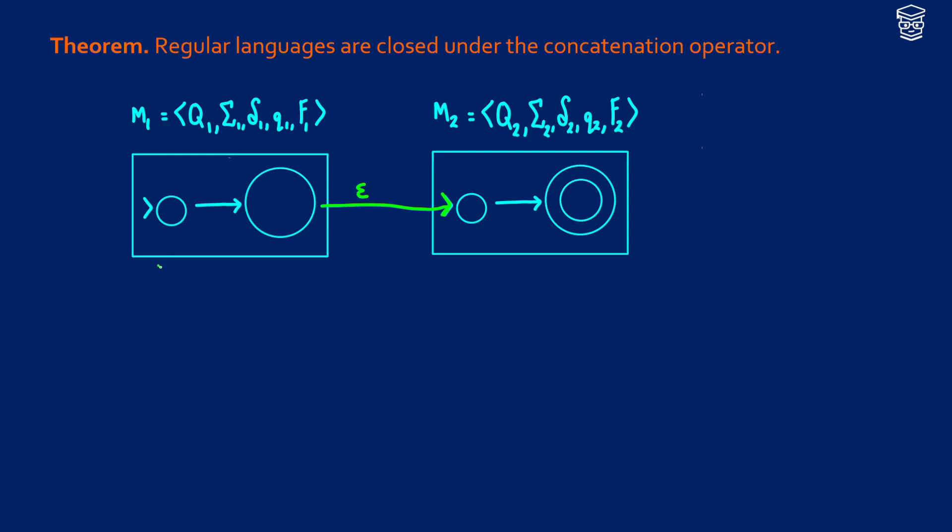So what this is going to mean is that we're going to have something that goes through M1, M1 is going to finish, it's going to transition into M2, and then M2 is going to finish and it's going to either accept it or it'll be rejected somewhere along the line.